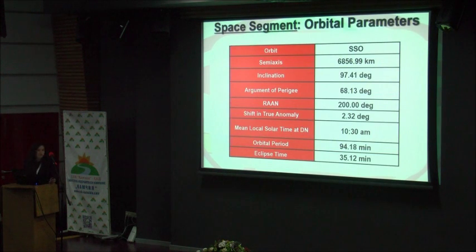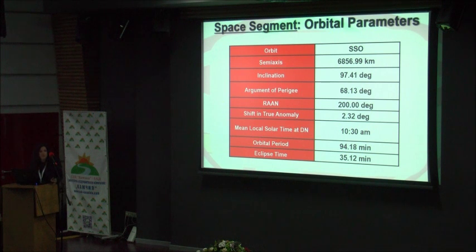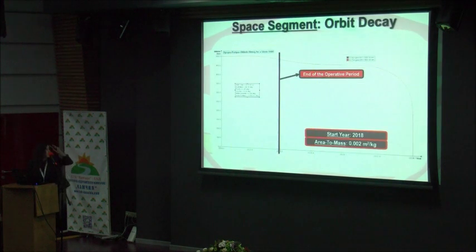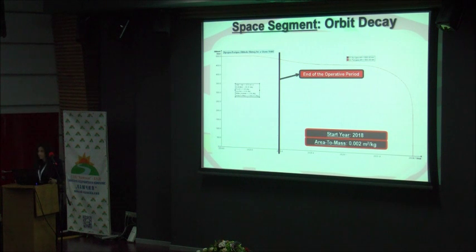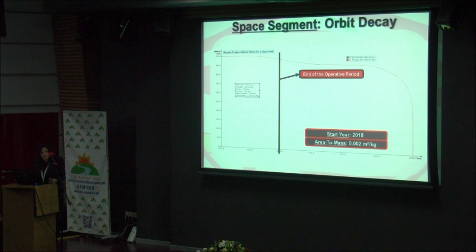For the orbit, we need a sun-synchronous orbit at an altitude of around 500 kilometers. For the orbital decay, we performed an analysis using DAS 2.0, available under the NARVA license, and we estimated that over our expected mission lifetime we will have an orbital decay of around 25 kilometers, considering a large window starting from 2018.